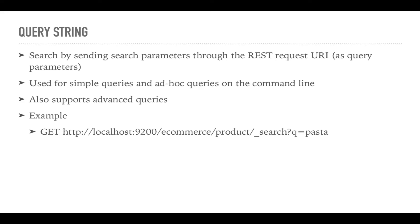The query string method is usually used for simple queries and ad hoc queries on the command line, but it also supports rather advanced queries. On this slide, you can see an example of how a query could look. The URL specifies the endpoint of the Elasticsearch cluster and searches for documents of the product mapping type within the eCommerce index. The underscore search API is used to perform the search, and the search query is specified as a query parameter. All fields are searched by default. This HTTP GET request is all it takes to perform a search in Elasticsearch.